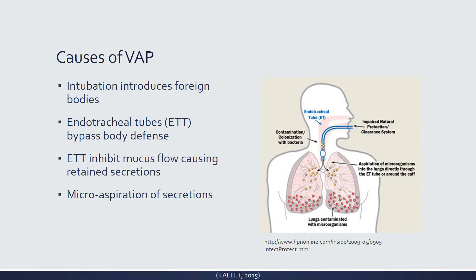A major cause of VAP is micro-aspiration of secretions. Most ET tubes have a cuff or balloon that forms a seal in the trachea, allowing mechanical ventilation and preventing stomach contents from entering the lungs — but this seal isn't perfect. Oral secretions pool on top of the cuff and seep around it into the lungs. You can't completely prevent this; over-inflating the balloon damages the tracheal wall. Suctioning before deflating the cuff and using special ET tubes can help minimize this.